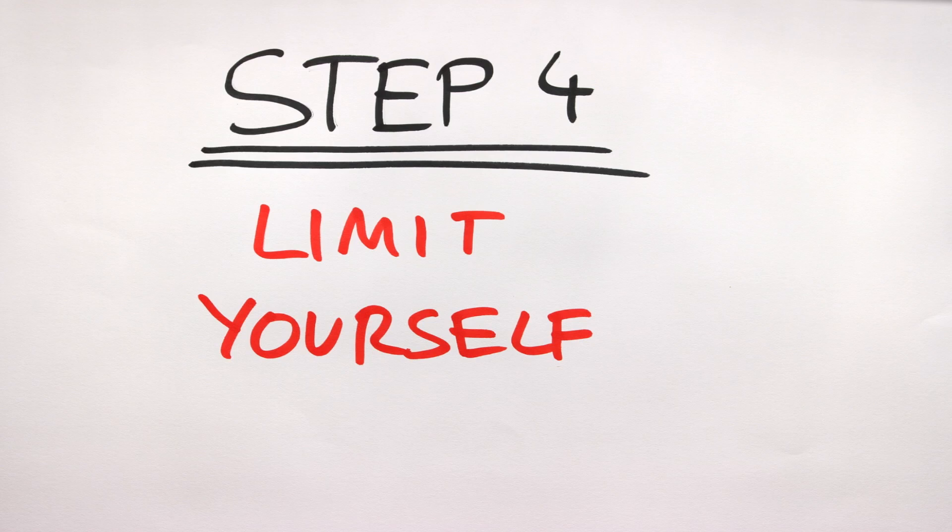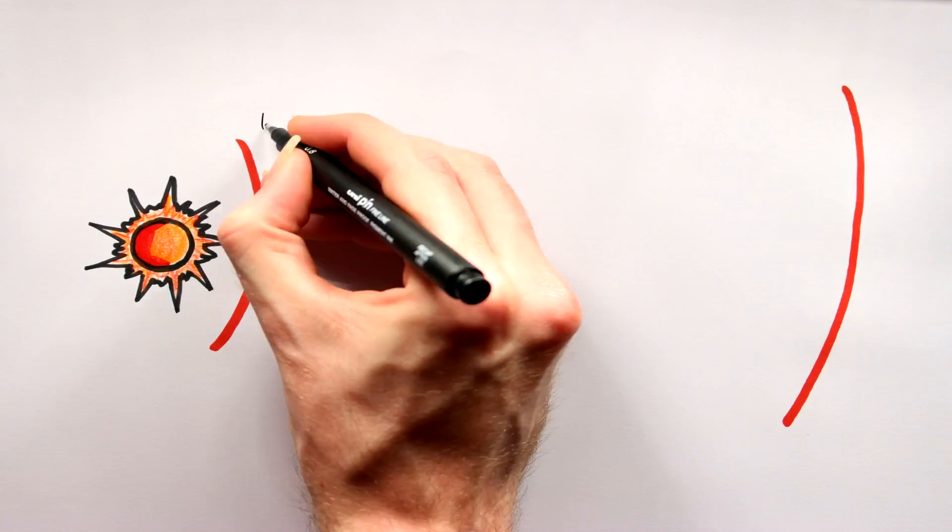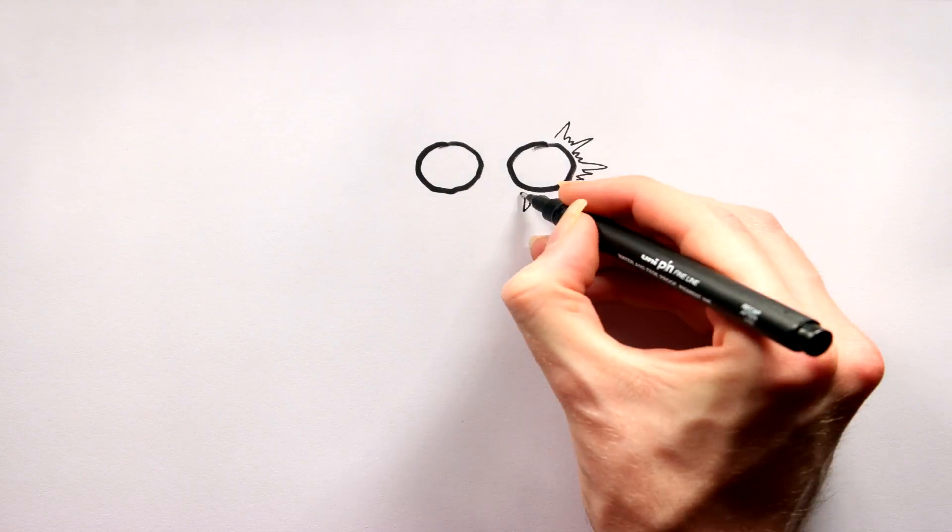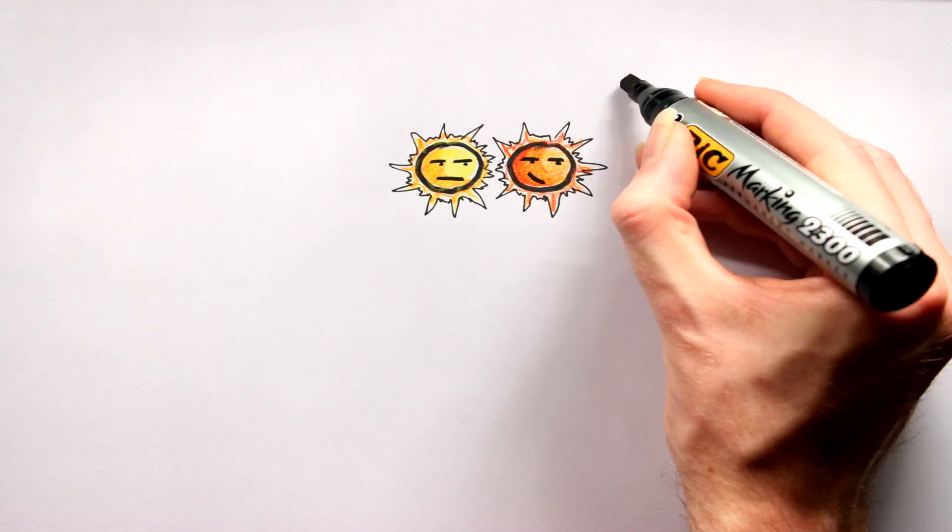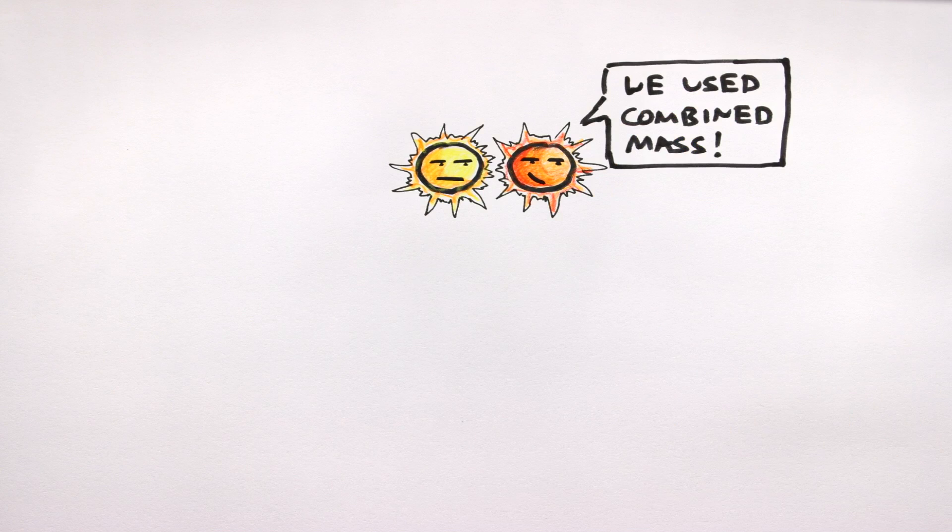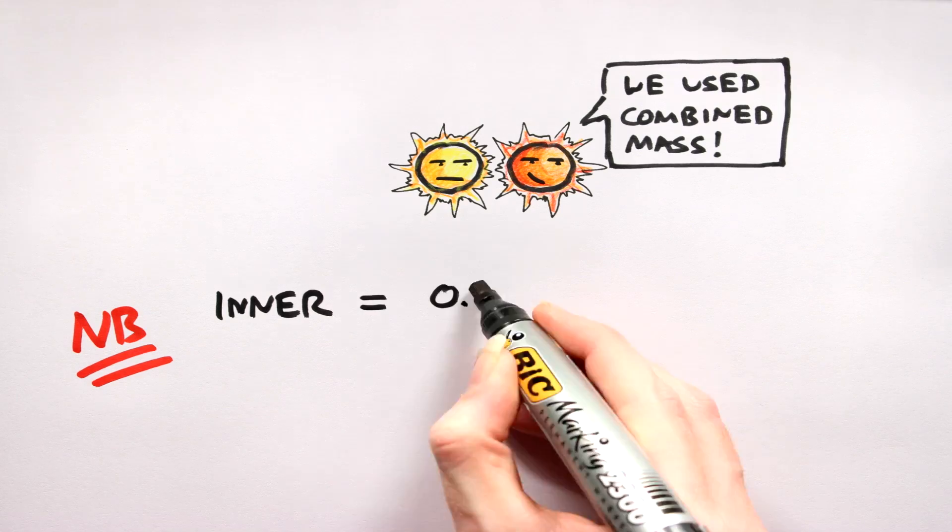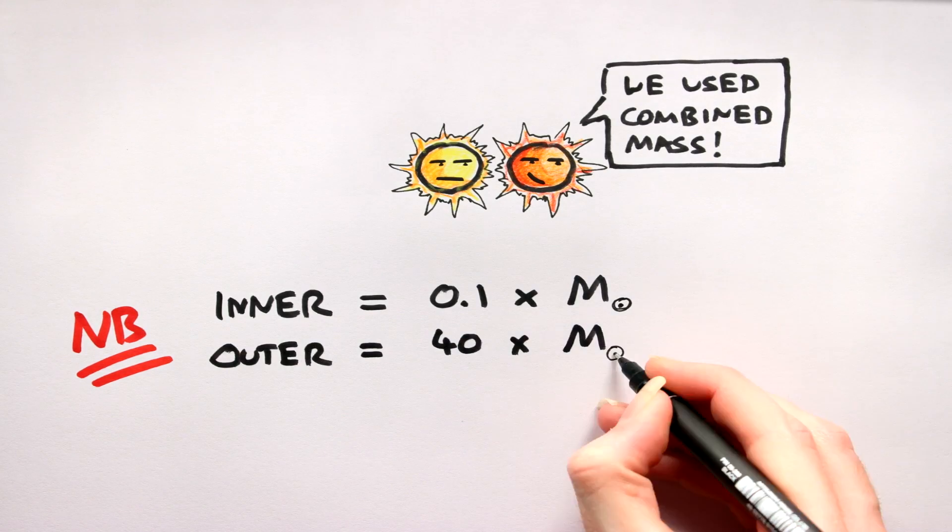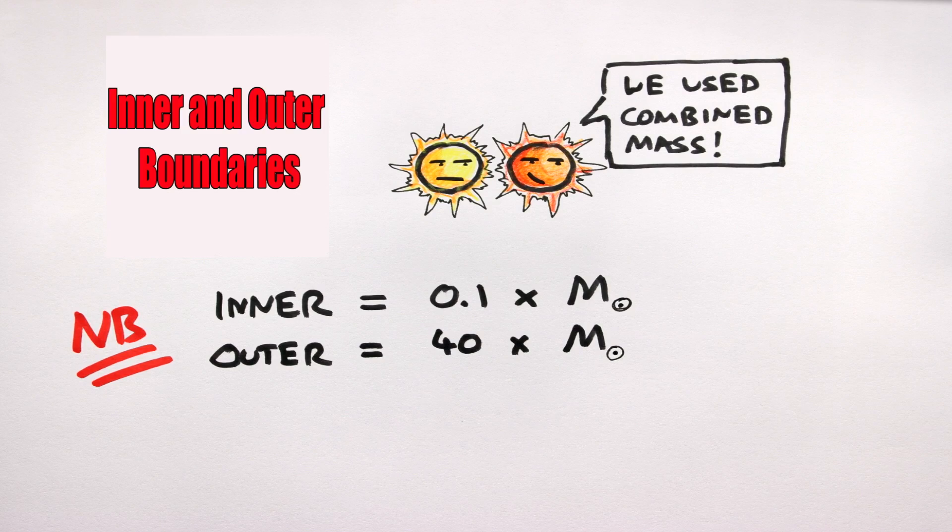Step 4: Limit Yourself. Next, figure out the inner and outer planetary limits of each of the stars. So in the last video, given that the stars were so close together, we could in effect treat them as one single star. Here not. Here we need to resort back to the old equations: 0.1 times m for the inner limit and 40 times m for the outer limit. Again, click the links for more info.